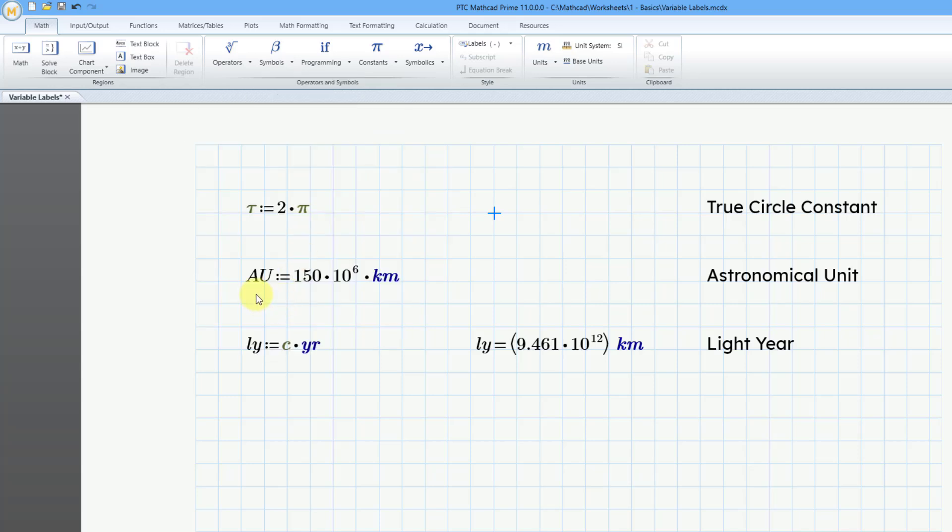Let's take a look at the other two math regions. For example, I have set up a variable for the astronomical unit. I have also set up a variable for lightyear. Now you could make these constants, but the advantage of setting them to units is that you can use them in different evaluations.